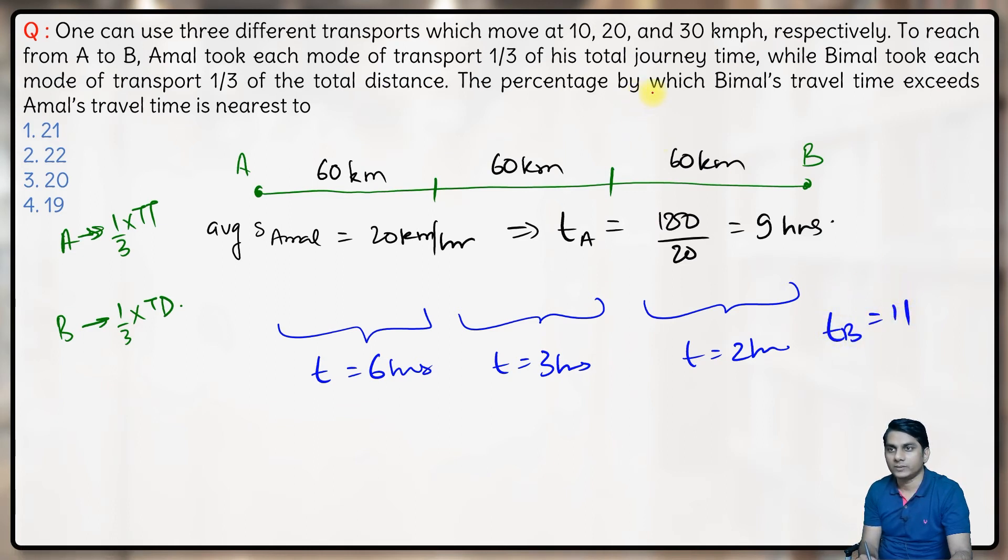We have to figure out the percentage by which Bimal's travel time exceeds Amal's travel time. So 11 exceeds 9 by what percentage? 2 by 9. So 2 by 9 times 100 percent, which is 22.22 percent. Hence the correct answer is 22 percent.